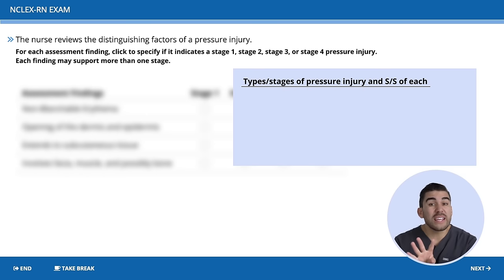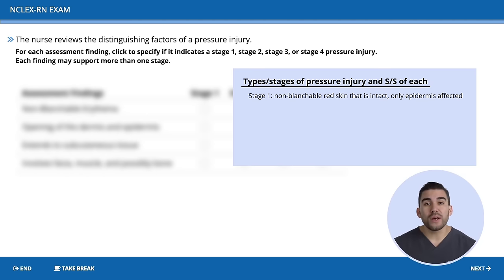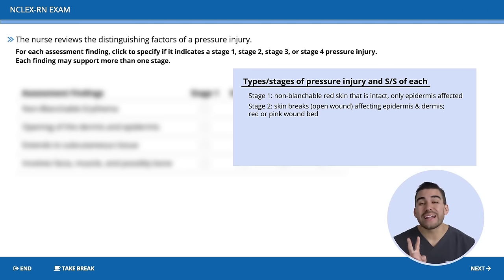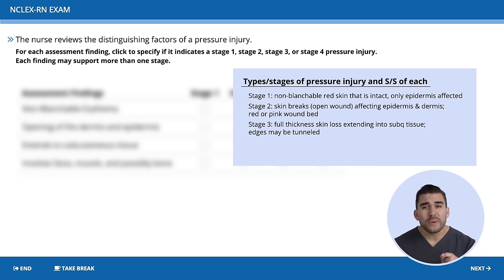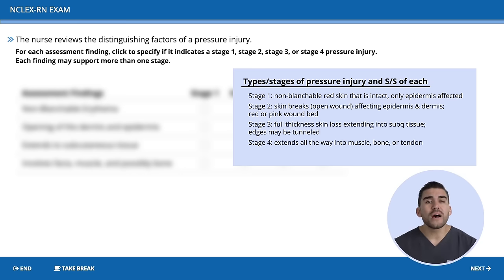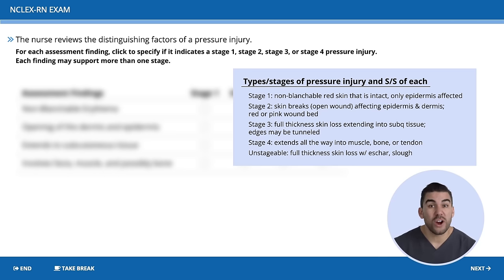To make this super simple, think four layers of skin for four stages of pressure injury. In stage one, only one layer of skin is affected — the epidermis — so we see non-blanchable redness of skin that is intact. In stage two, two layers of skin are affected: the skin breaks, we have an open wound affecting both the epidermis and the dermis, and the skin appears red or pink on the wound bed. Stage three means three layers of skin affected — full thickness skin loss extending down into the subcutaneous tissue. Stage four has four layers affected, extending all the way down into the muscle, even bone and tendon. And the unstageable is full thickness skin loss with eschar and even slough.